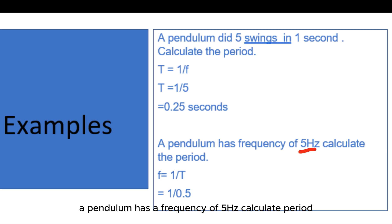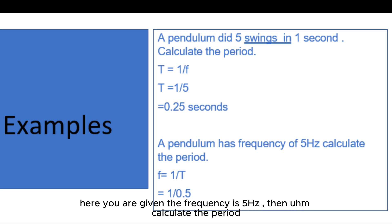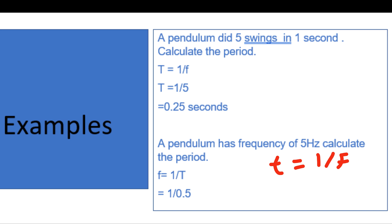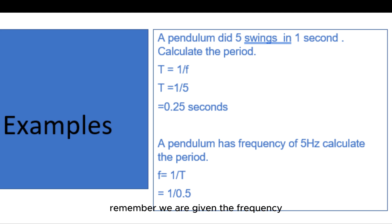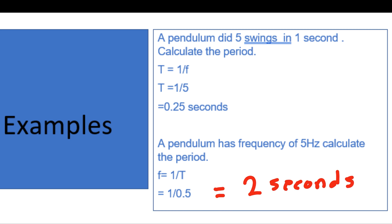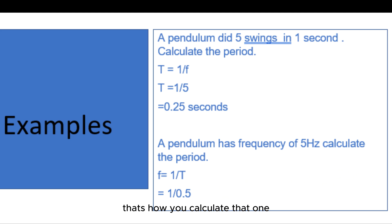Another example: a pendulum has a frequency of 0.5 hertz — calculate the period. We are given the frequency, so T equals one over f, which is one over 0.5, giving us two seconds. That is how you calculate the period.